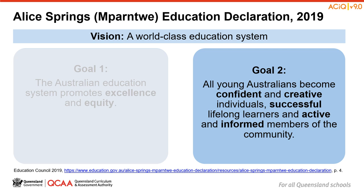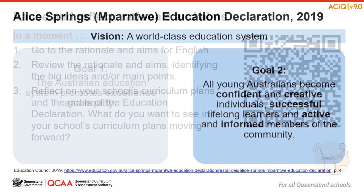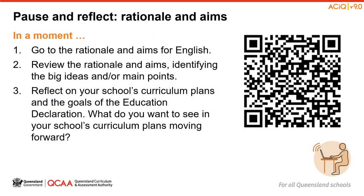The second goal from the Mparntwe Education Declaration states that all young Australians become confident and creative individuals, successful lifelong learners and active and informed members of the community. The three dimensions of the curriculum and the English content present wonderful opportunities to engage with this goal. So, what role does English play in enacting these goals? Let's start by considering the rationale and aims.